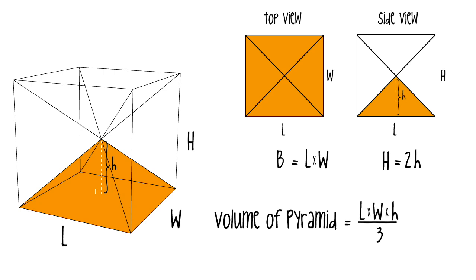And finally, substitute base for length times width. And now we have the familiar formula of base times height over 3.